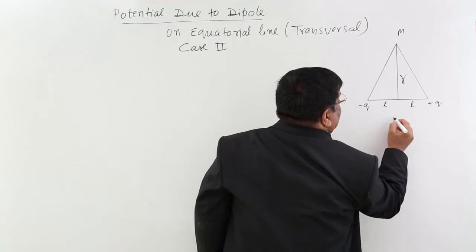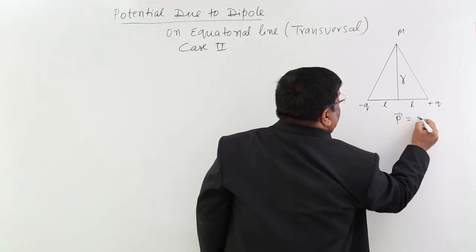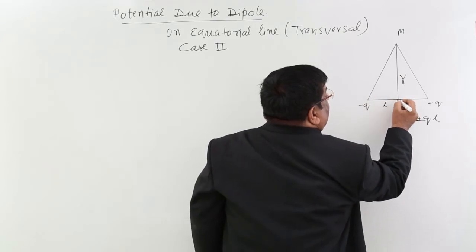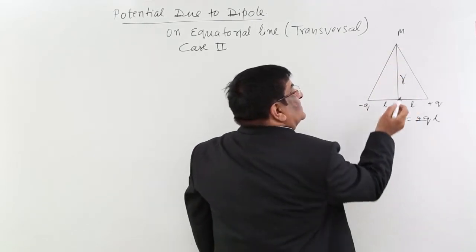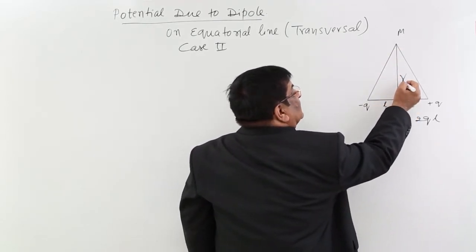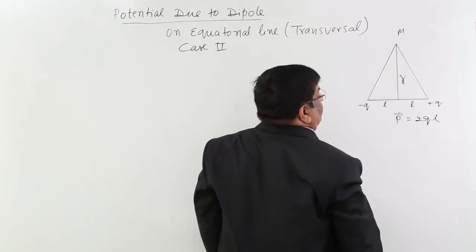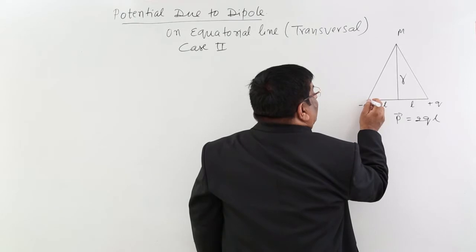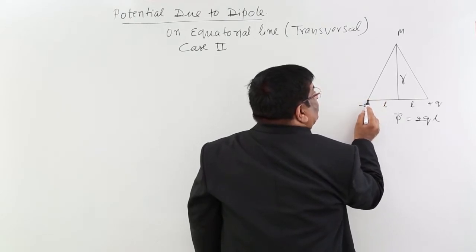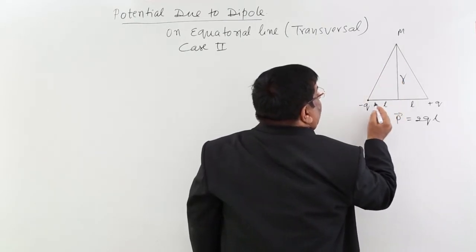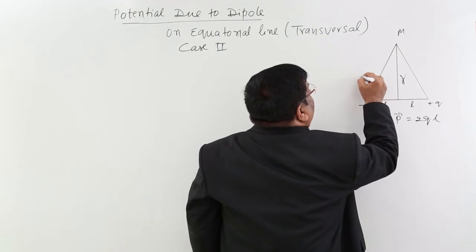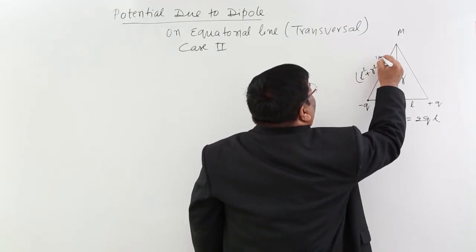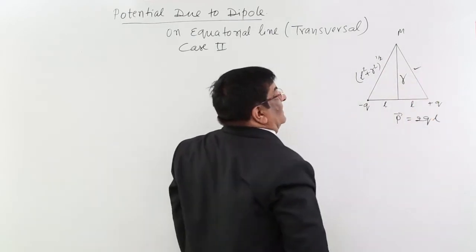The dipole moment direction P is equal to 2QL, and the equatorial line is perpendicular from the center. The distance from the center to point M is R, and half the dipole length is L. By Pythagoras, the distance from each charge to point M is the square root of L squared plus R squared.